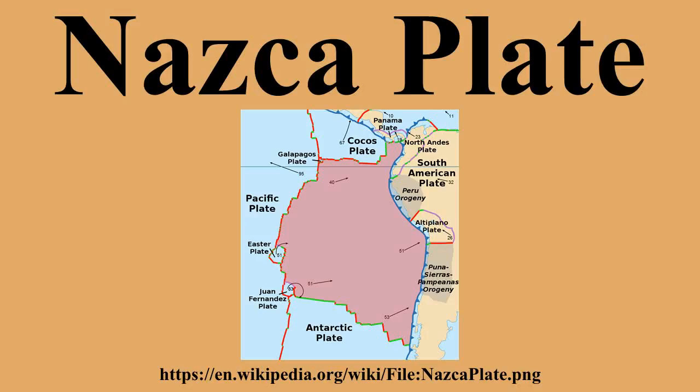The Easter Island microplate is a third microplate located just north of the Juan Fernandez microplate and lies just west of Easter Island. The Carnegie Ridge is a 1,350 km long and up to 300 km wide feature on the ocean floor of the northern Nazca Plate that includes the Galapagos Archipelago at its western end. It is being subducted under South America with the rest of the Nazca Plate.